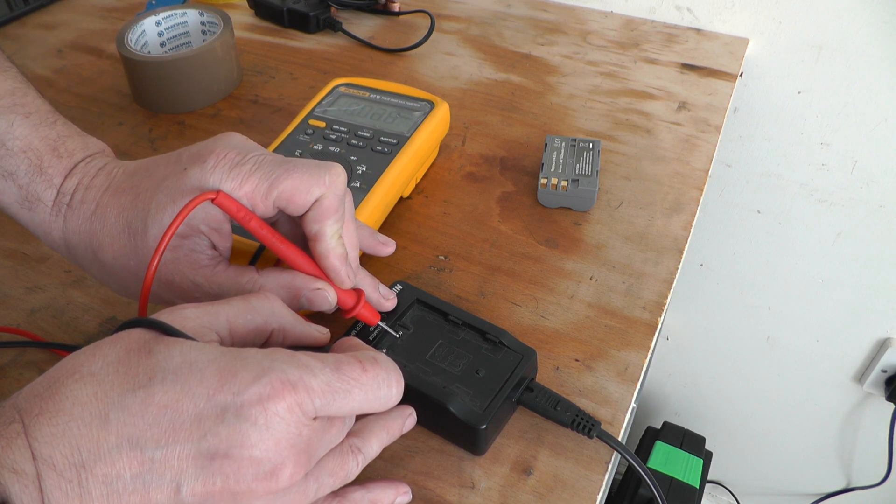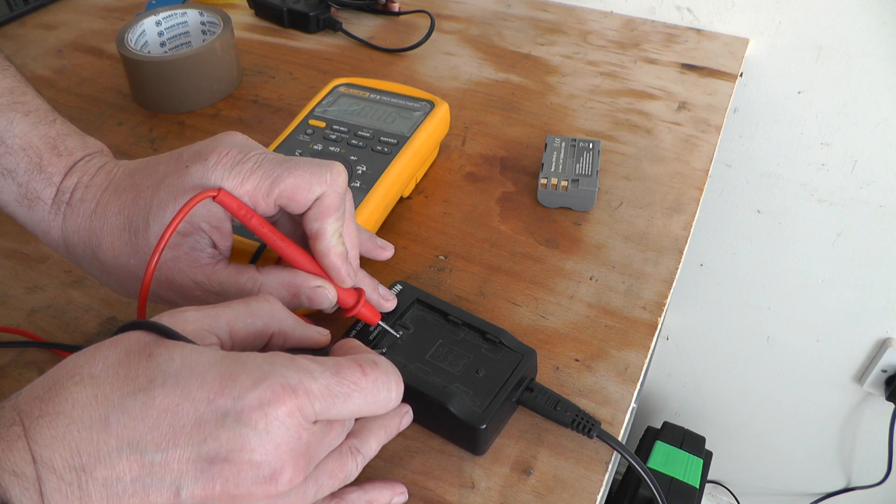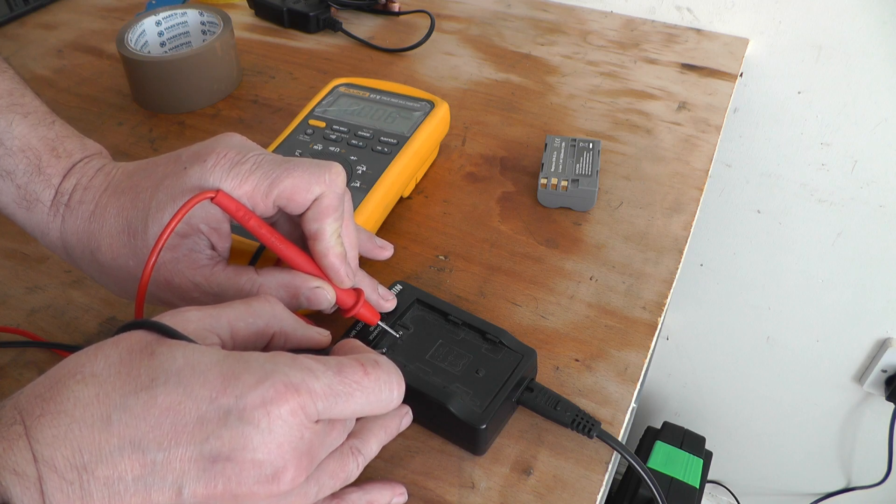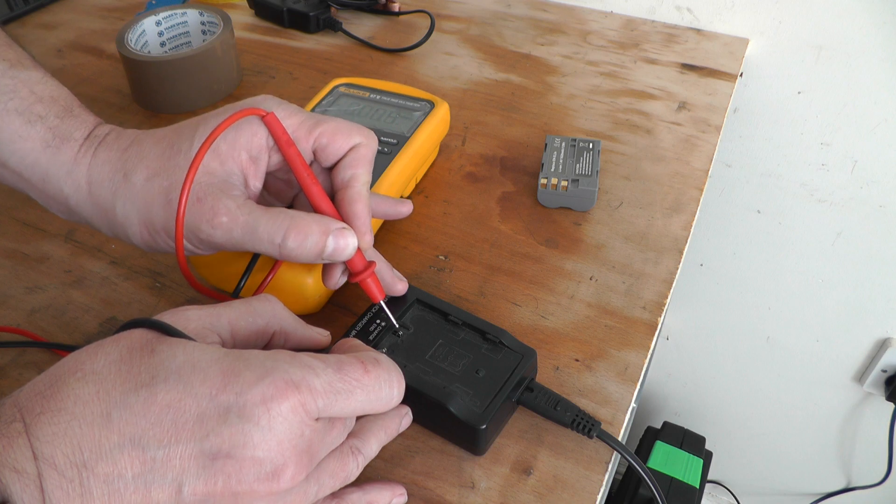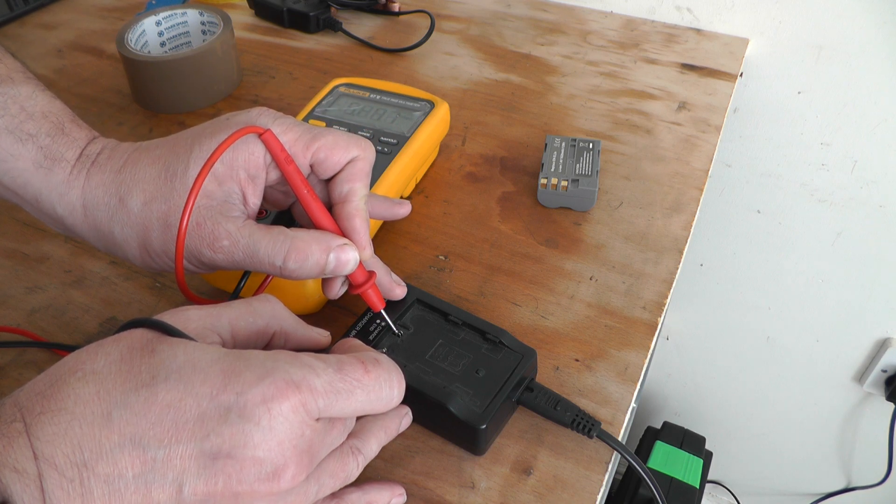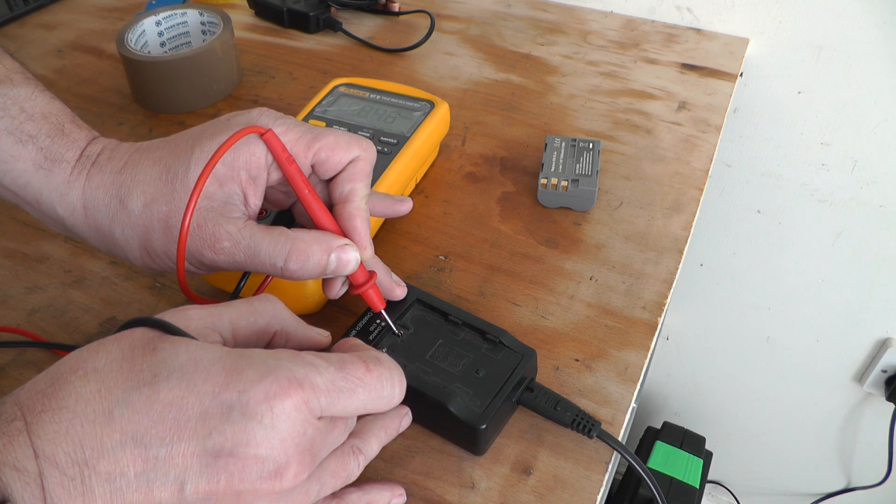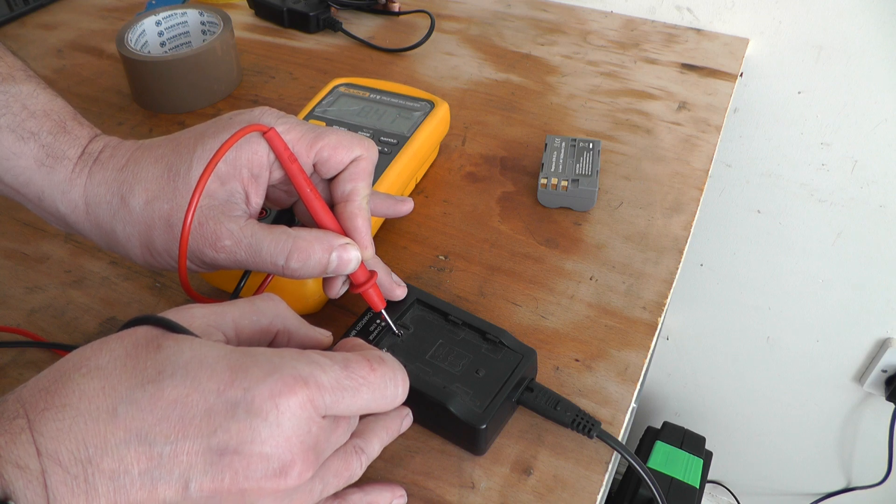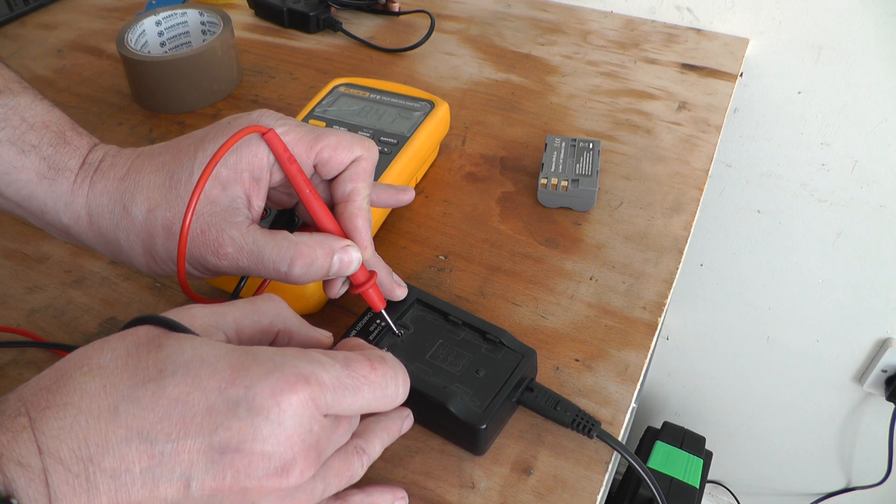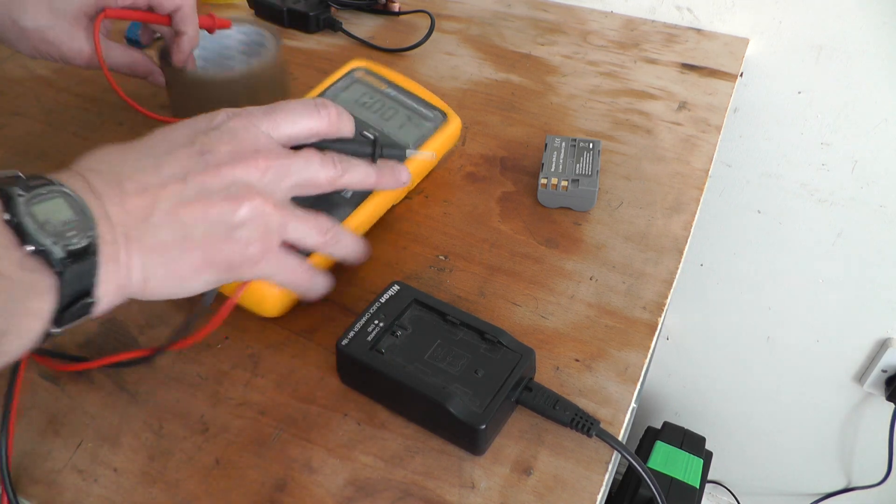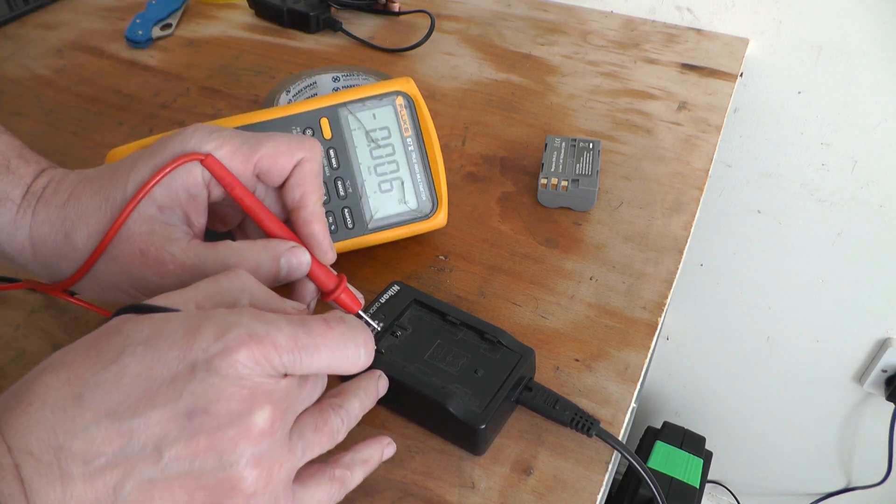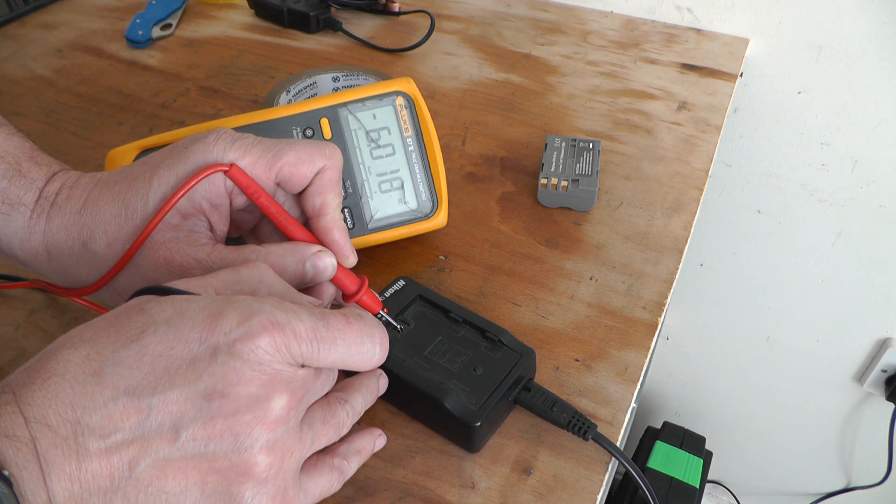I'm getting hardly anything. That is because you need to touch both of them because one's like an enabling pin or something. There you go, the meter is reading 8.41.